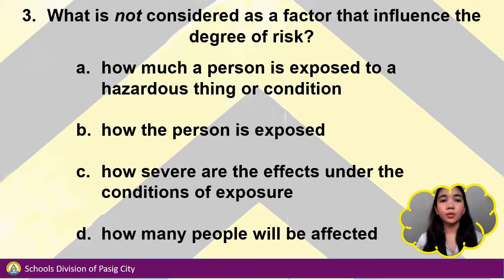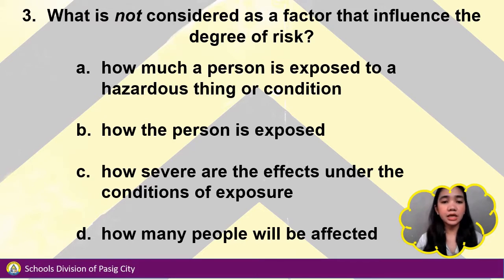Number 3. What is not considered as a factor that influences the degree of risk? A. How much a person is exposed to a hazardous thing or condition, B. How the person is exposed, C. How severe are the effects under the conditions of exposure, and D. How many people will be affected. Answer: Letter D.